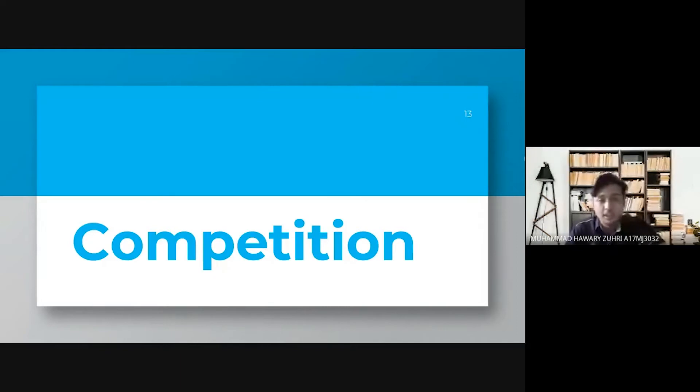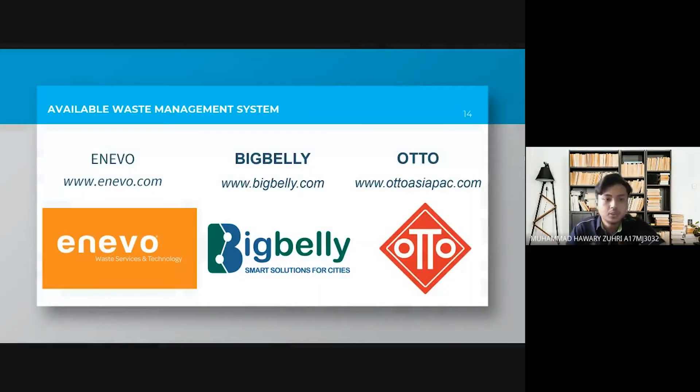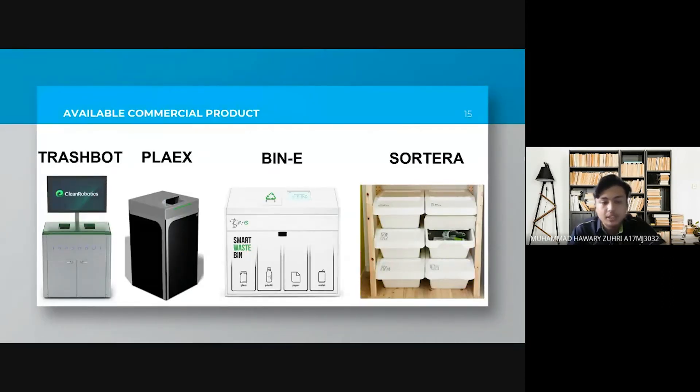Thank you. Now I will talk about the competitions. We have two types of competitors. The first one is available waste management system and the second one is available commercial product. For available waste management system, we found three waste management which are Enevo, BigBelly and Auto. All these three waste management systems provide the solution for waste problems for their country. Next, for available commercial product, we found three smart sorting bins which are TrashBot, Blabox and BinE, while the other one is manual sorting bin which is Sortera IKEA.